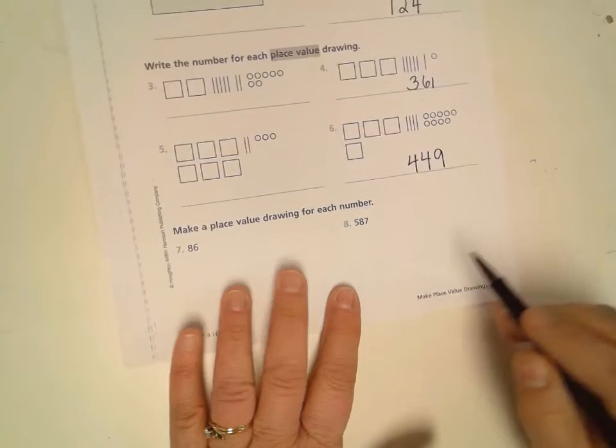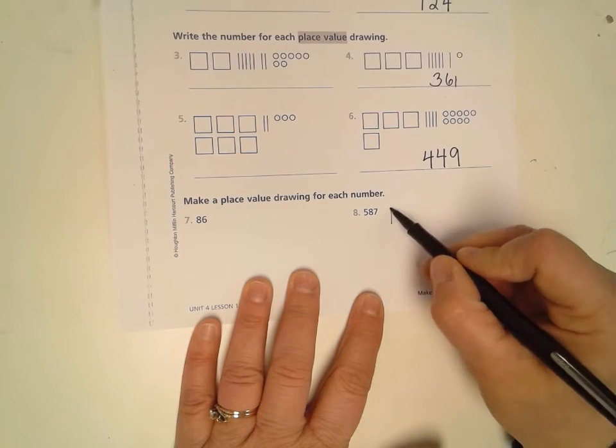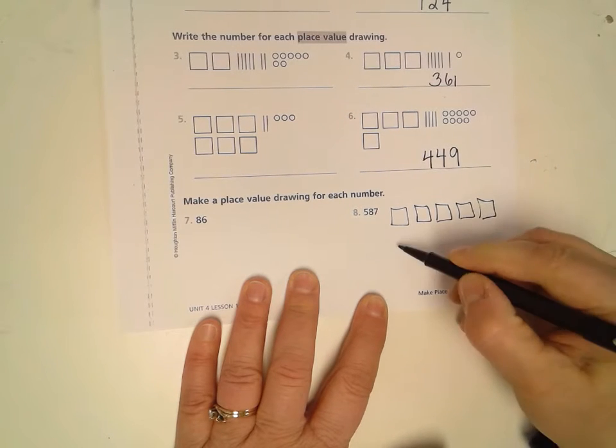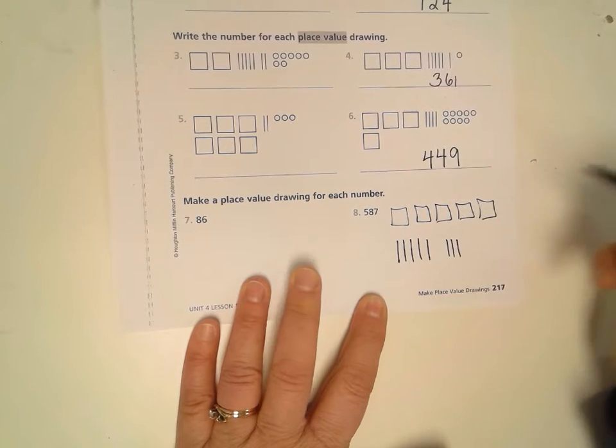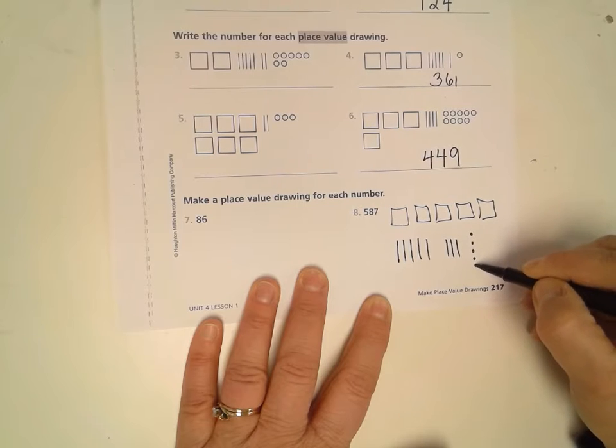Number six, same idea. One, two, three, four hundred, and then four tens and then nine ones. And this one you guys didn't have to do. We didn't make you draw it but I'm going to draw it for you. Five hundred eighty-seven would be five of the blocks. Eight, one, two, three, four, five, six, seven, eight with that space in the middle, so eight tens, and then seven ones. We group the five and the six and the seven there.